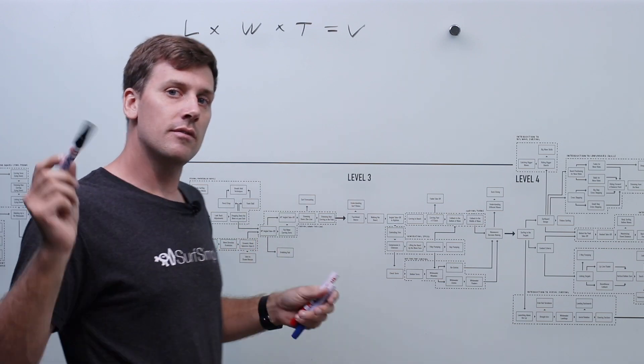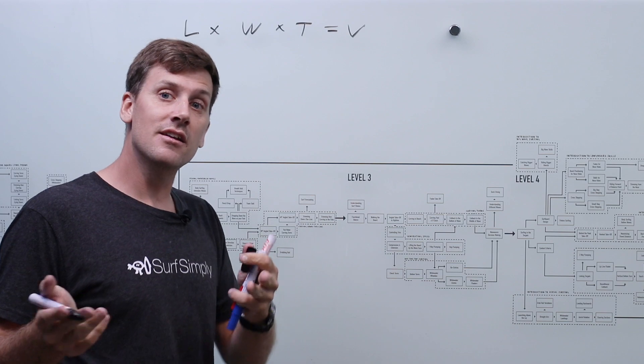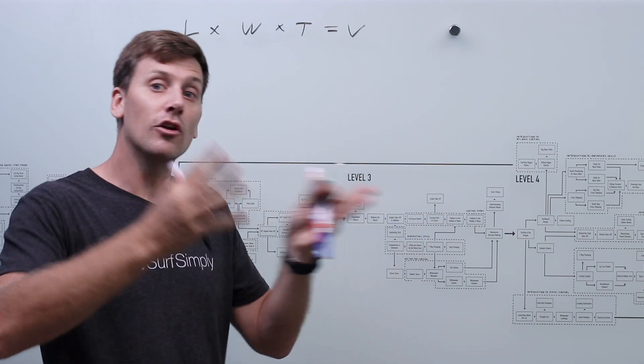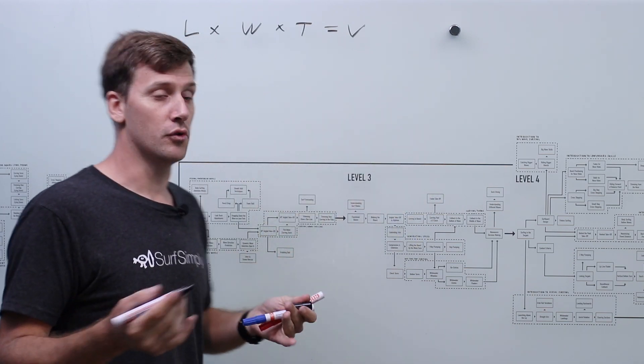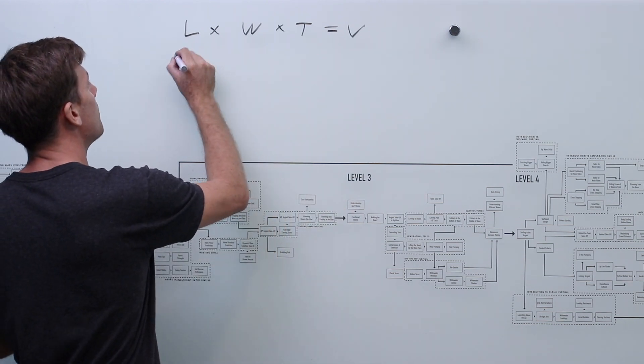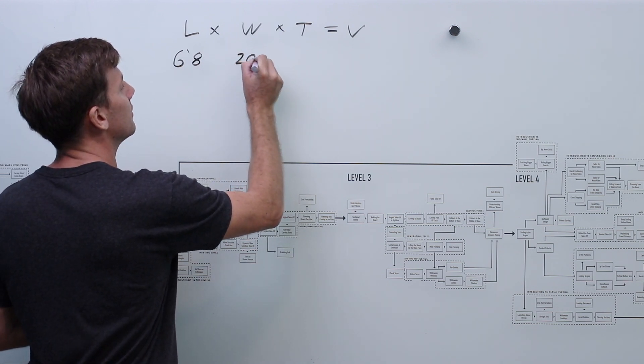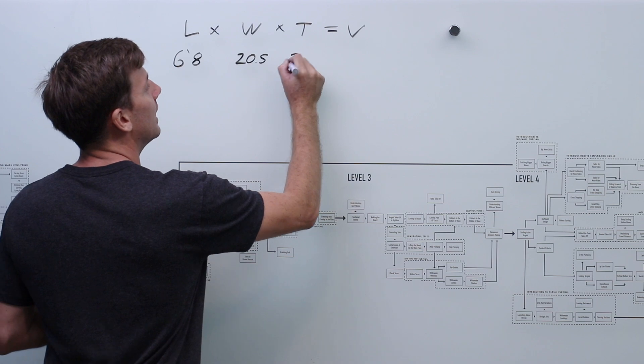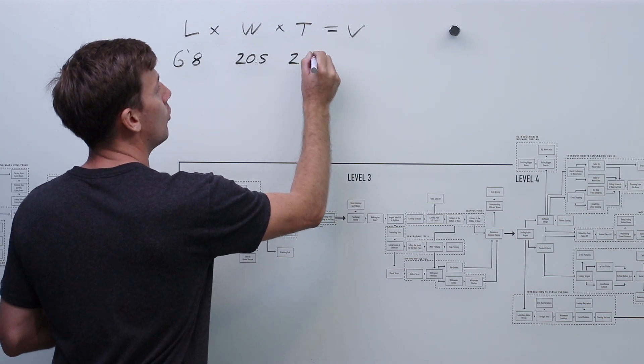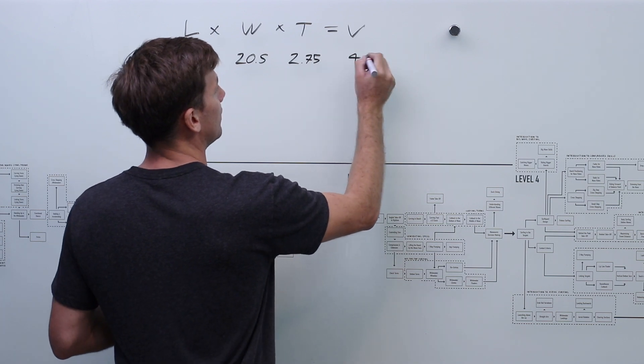But you said 6'8" and 40 litres which is a pretty standard length to volume ratio for a performance short board shape. So I went online and I found a board where there was one model that was 6'8" by 20.5 wide by 2.75 thick and that volume was 40 litres.